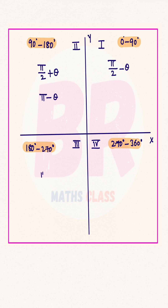Pi plus theta lies in the third quadrant. 3 pi by 2 minus theta lies in the third quadrant.